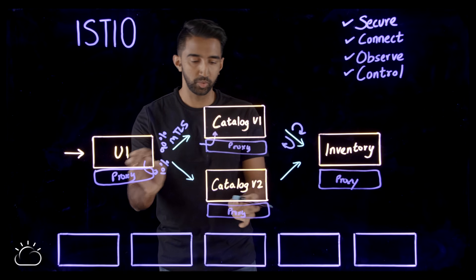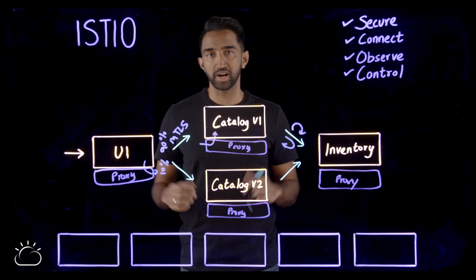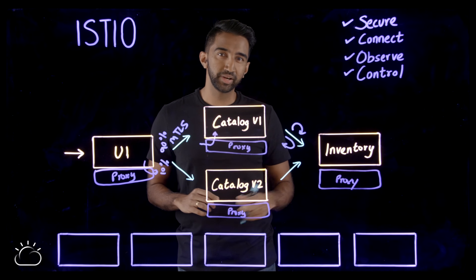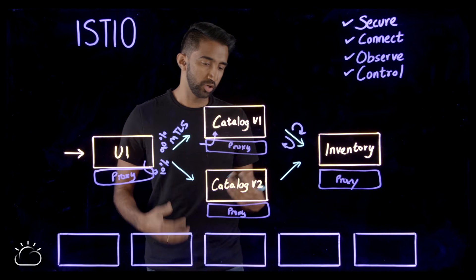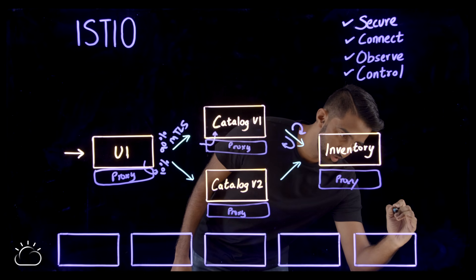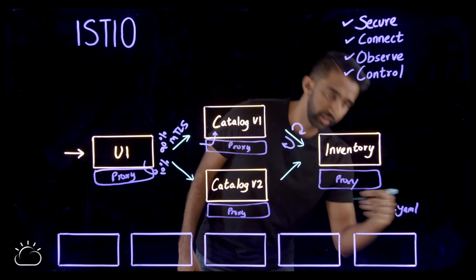Istio will configure each one of these proxies with your desired configuration. Istio extends Kubernetes using CRDs. So to apply Istio configuration, you just write your YAML and then apply it to Kubernetes.